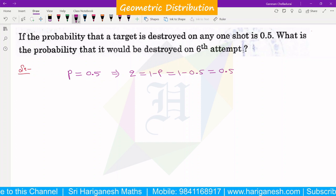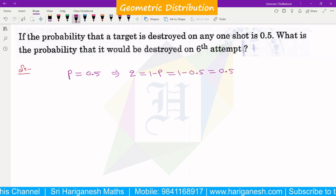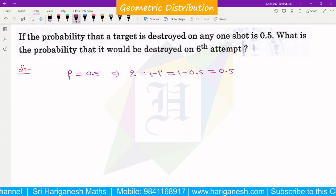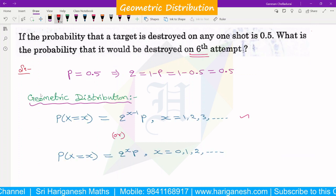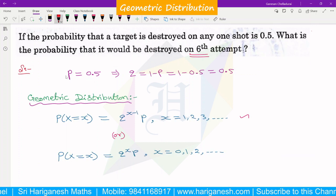This problem is under geometric distribution, so it will have p and q. This is the problem of the probability mass function of geometric distribution.